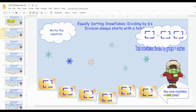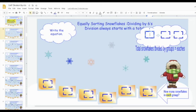How many snowflakes do we have? One, two, three, four, five, six, because division always starts with the total. So we click in here, double click, click, click, and we type in six.